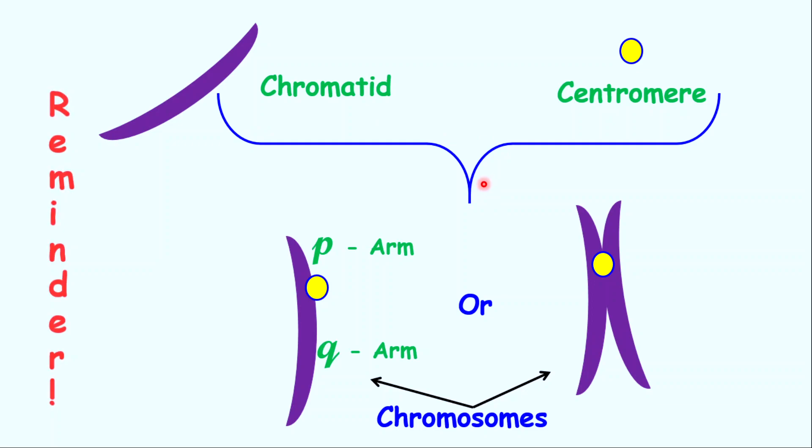When they go together, chromosomes can be presented in either of two ways. On the left, where you have a single chromatid and a single chromosome because of the single centromere.